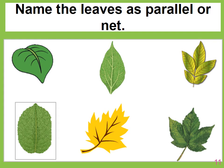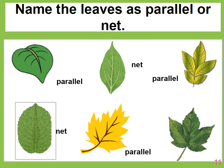Name the leaves as parallel or net. Pause the video and see how many you can get right. The first one has parallel veins, the middle one has net veins, then parallel — very good. The next is net, then parallel, and the last one is net. Great job!